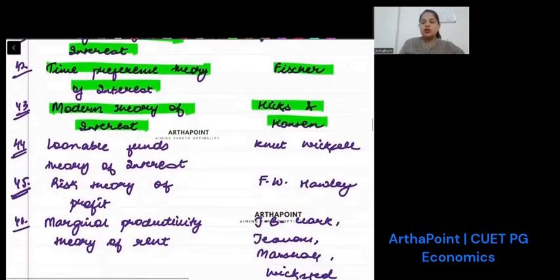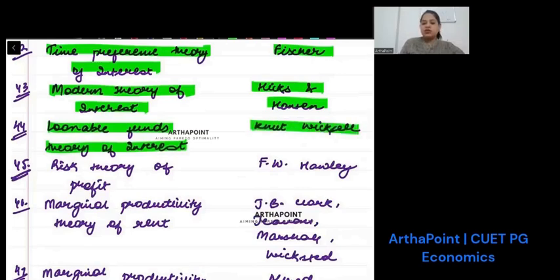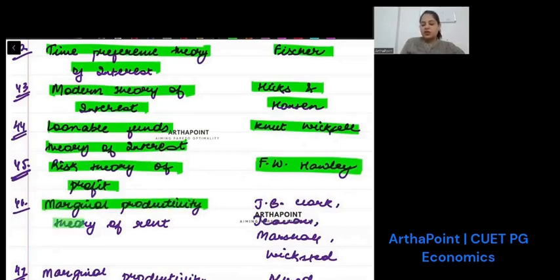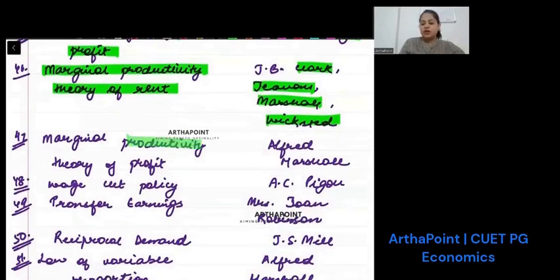I'm scrolling slowly so that you can write it. Loanable fund theory of interest was given by Knut Wicksell. Risk theory of profit was given by F.H. Knight. Marginal productivity theory of rent was given by Clark, Jevons, Marshall and Wicksell.